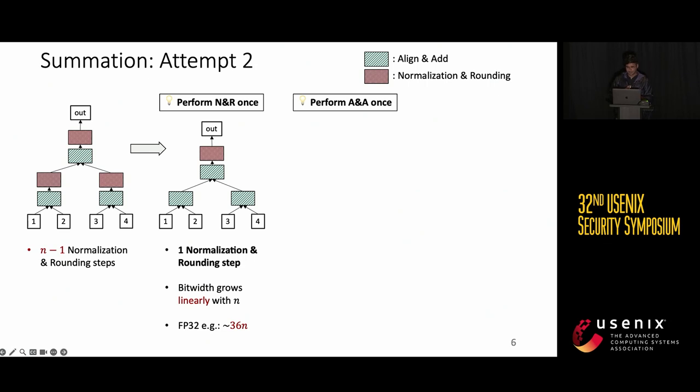That was the first idea. The second idea we think of is how about we align everything at once? So it seems in the prior solution, the bit width is growing so much because we are doing these pairwise alignment steps. How about we pick one exponent and align all the inputs to that exponent? Well, this solution is a lot better than the previous one in that the bit width only grows logarithmically with n now, but the concrete bit width that we have to work with is still quite large. There's a constant term which makes this baseline also impractical.